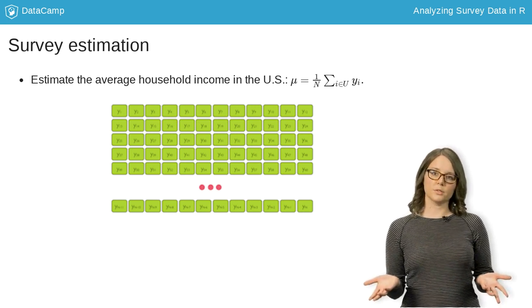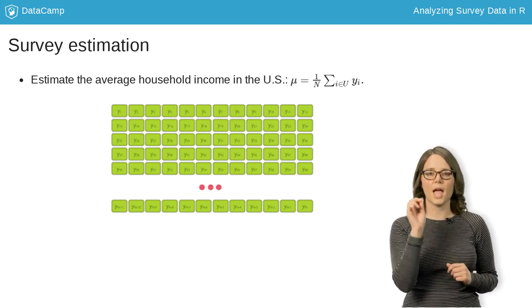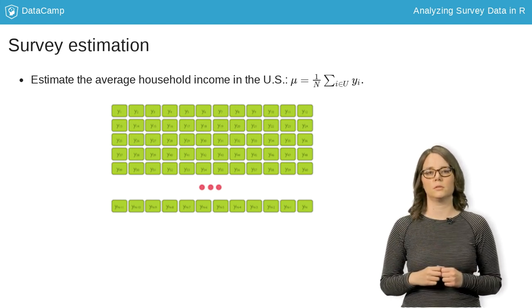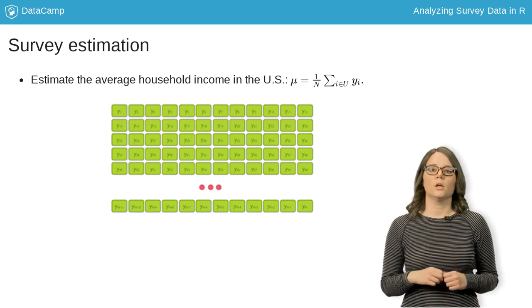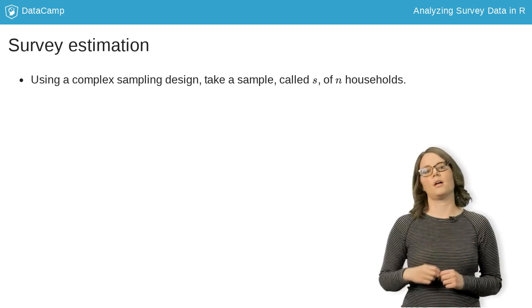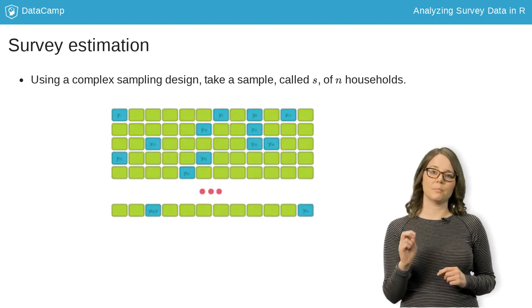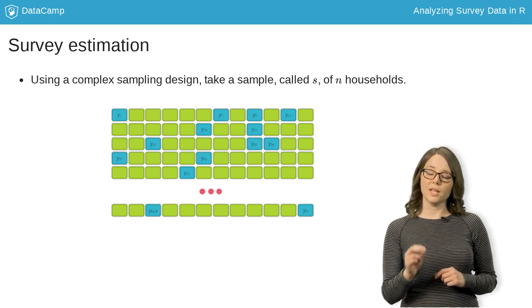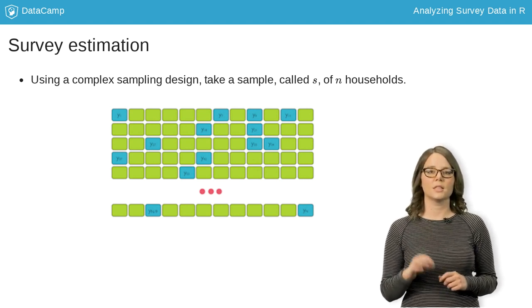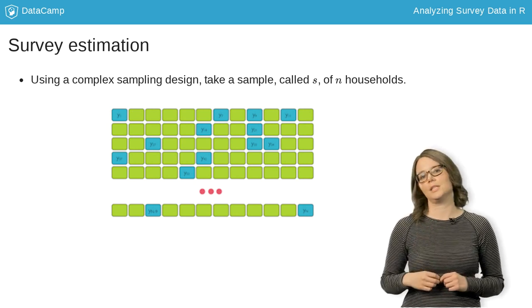Of course, we can only calculate mu if we have income data for every household. But we don't. Instead, BLS takes a sample of households, represented by the blue squares, using a complex sampling design. We call that sample S. They only collect income data for the N households in the sample.